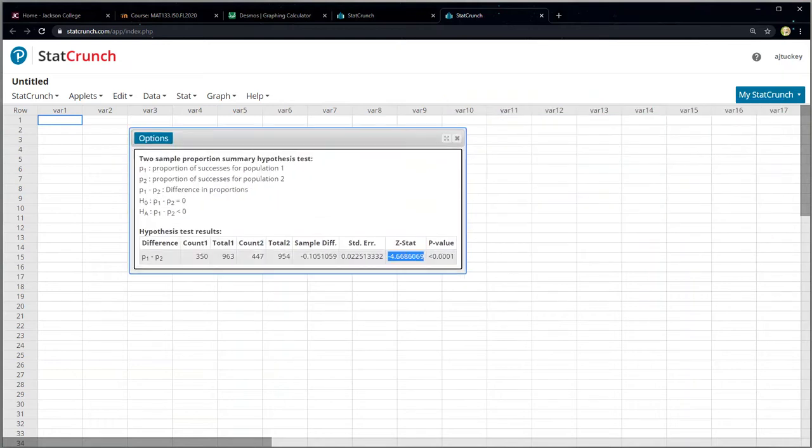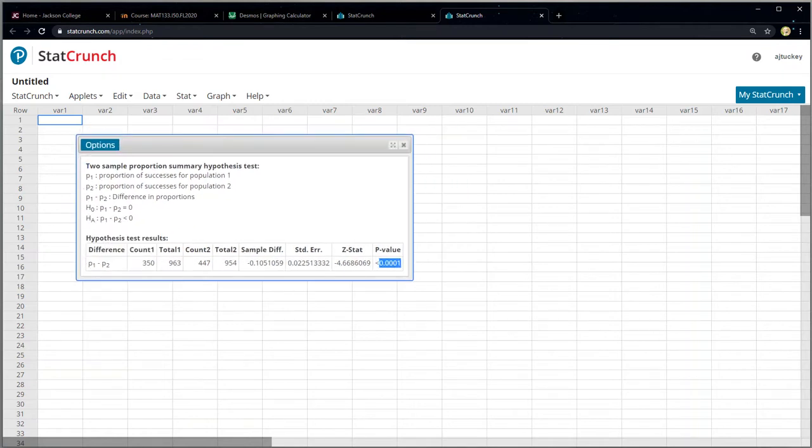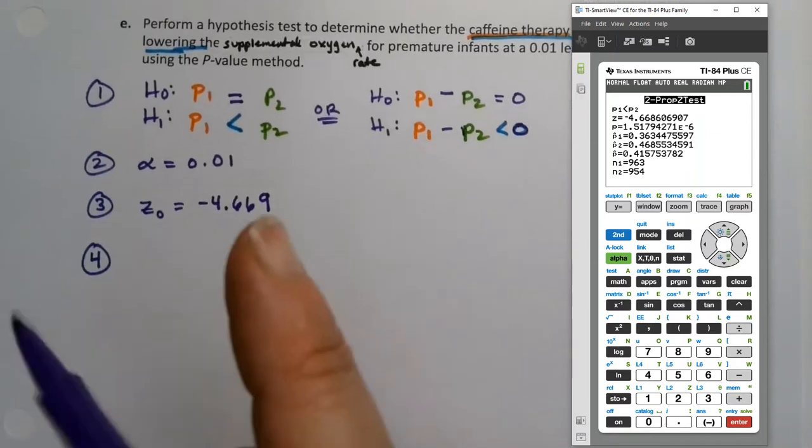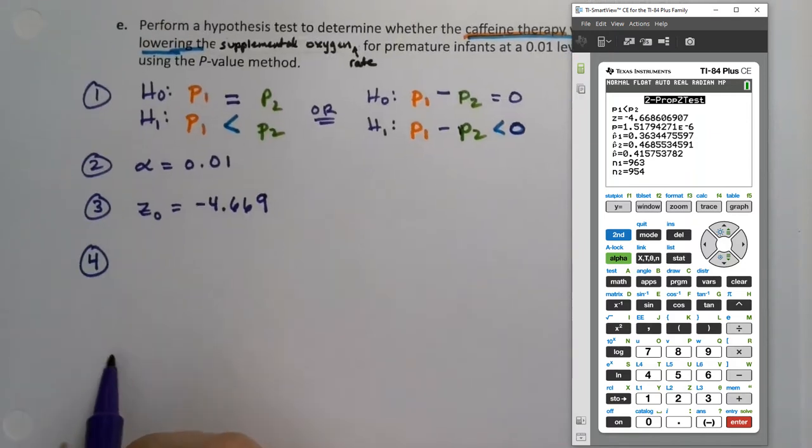And there you can see the same values. You can see your Z stat right there. There's your test statistic. You can see all your X's and N's right over here. And then you can see your P value, except you can't. But what's happening is your P value is so low that StatCrunch basically gives up and says, look, this is smaller than 0.0001. That's all you really need to know because your alpha is definitely going to be bigger than that, right? Whereas the calculator actually gives you a value. So this is one time where the calculator is a little nicer in some respects.